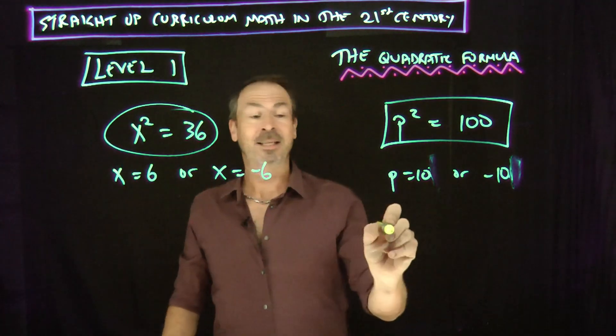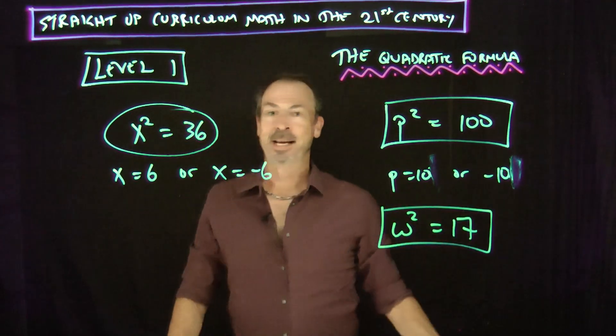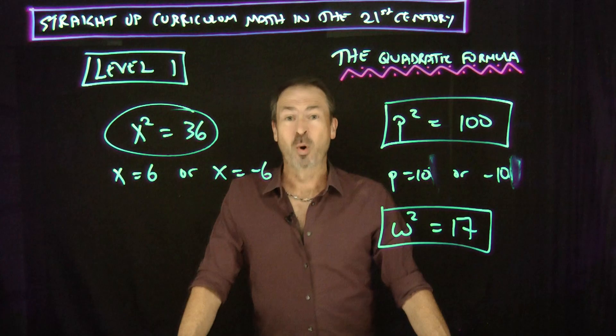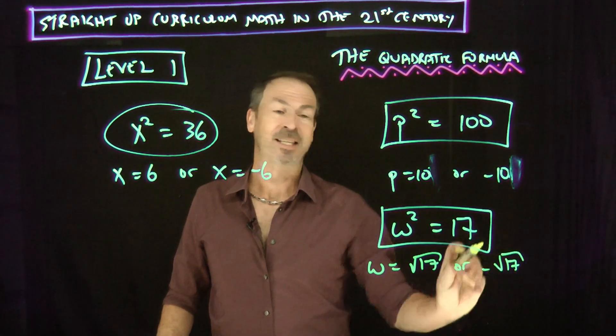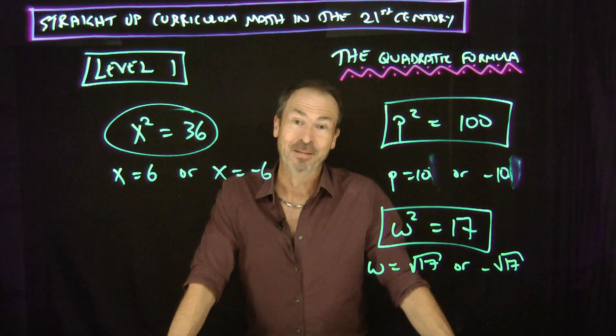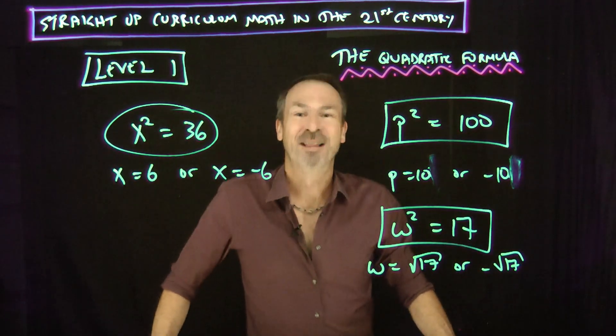Numbers don't need to be nice. What if I asked us to solve w squared is 17 in level 1? 17 is awkward, but okay, something squared is 17, so w better be the square root of 17 or it could be the negative version of that square root. That's level 1. Fabulous. We're solving quadratics already. Love it.